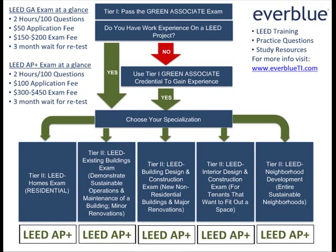To become a LEED Green Associate, someone must first pass the two-hour, 100-question LEED Green Associate exam. In order to take one of the LEED AP Plus Specialty exams, a person must first demonstrate that they have experience working on a LEED project. Once they have documented their experience, they are eligible to take any of the two-hour, 100-question LEED AP Plus exams.